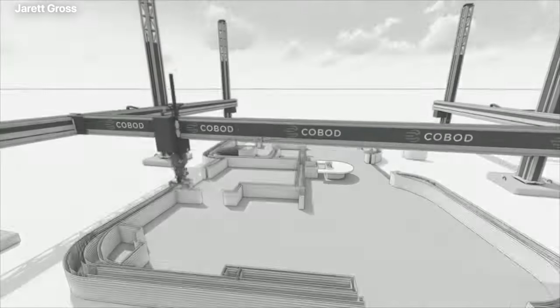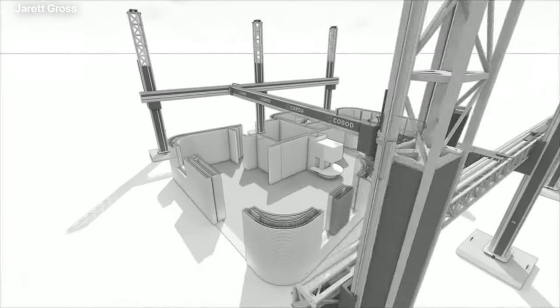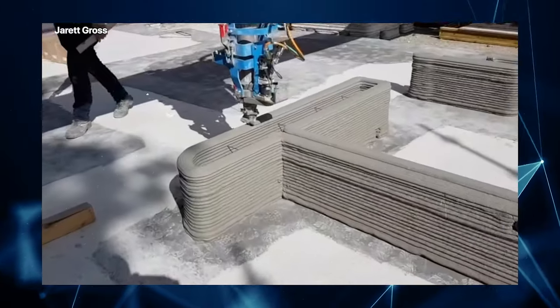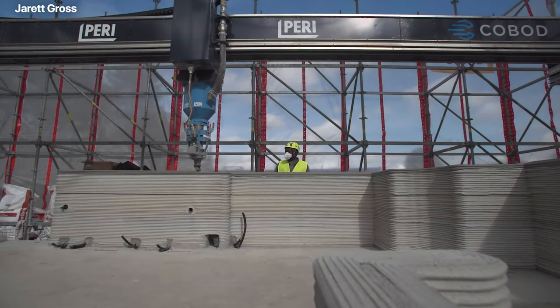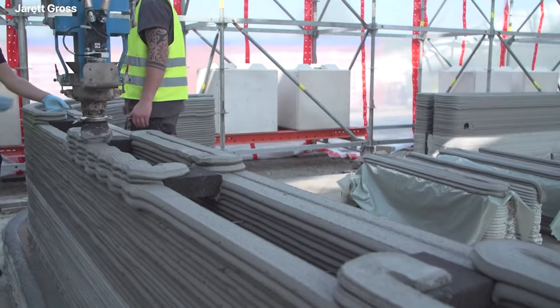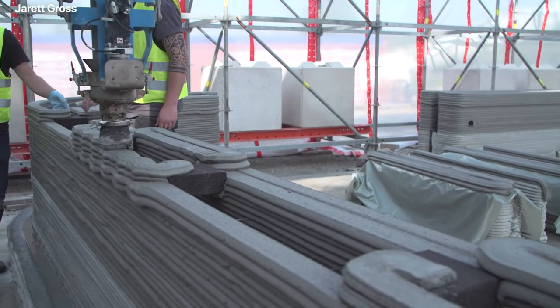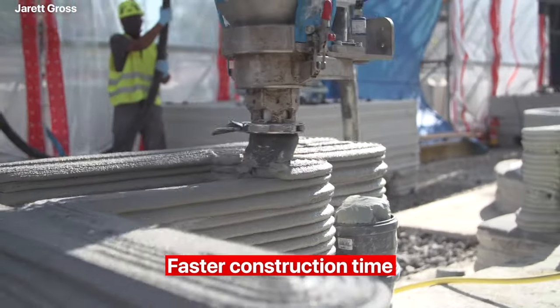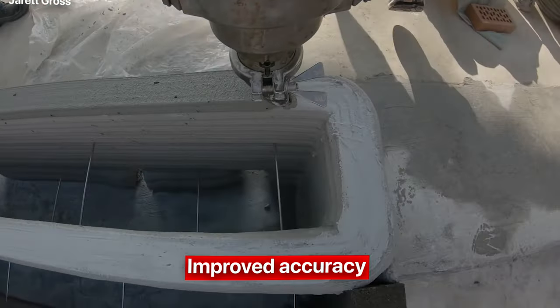3D Printing. 3D Printing is becoming a popular technology for building houses. It is a type of additive manufacturing that involves printing out a house, layer by layer, from a digital 3D model. 3D printing has several advantages compared to traditional construction methods, including reduced labor costs, faster construction time, and improved accuracy.